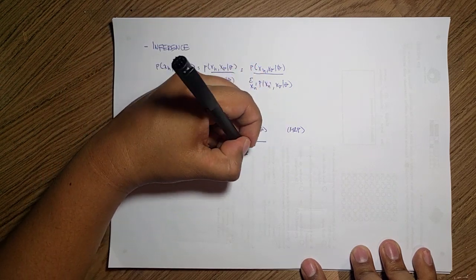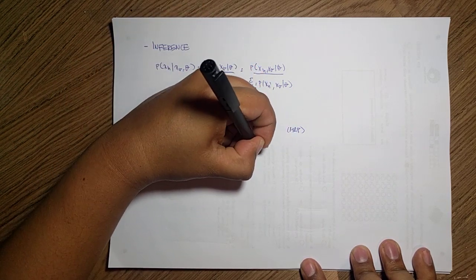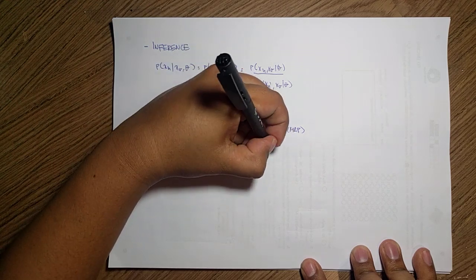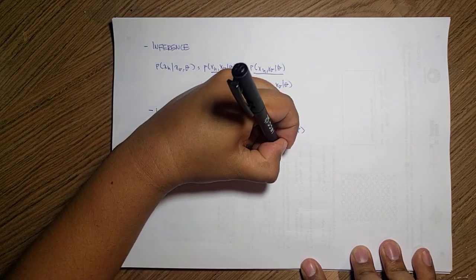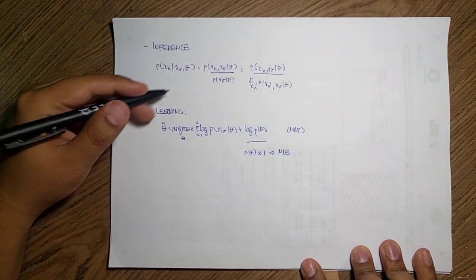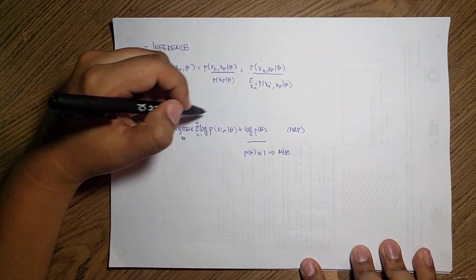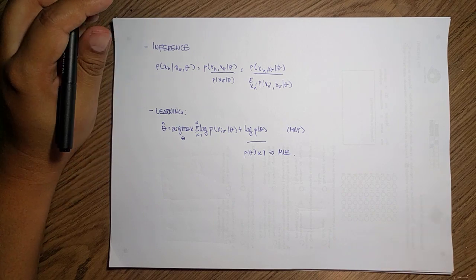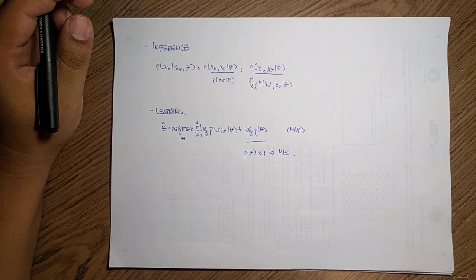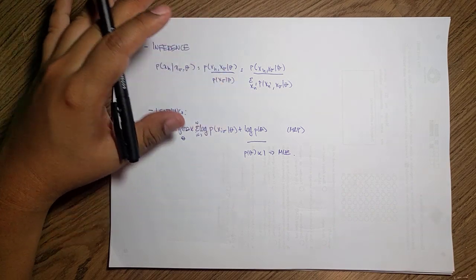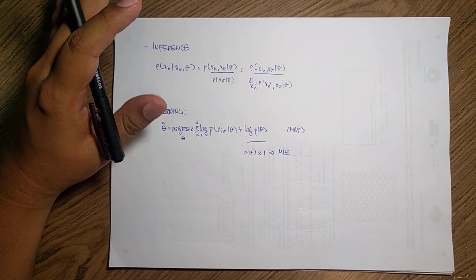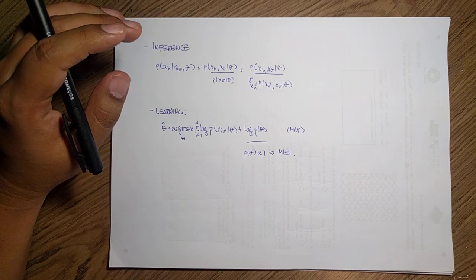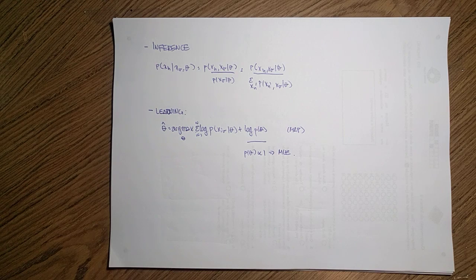So if p of theta is uniform then this becomes a maximum likelihood estimator. Because this doesn't matter and the data is the only thing that I have so this is like a really simple idea. So this would make sense from the next example. Stay tuned.